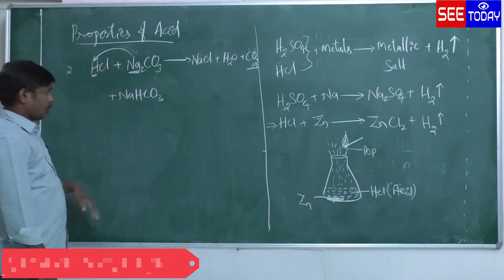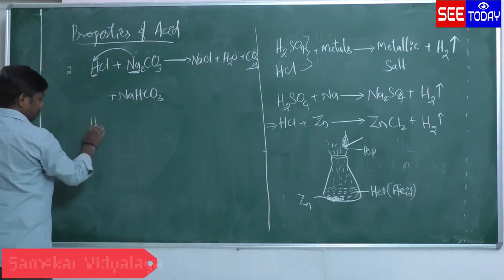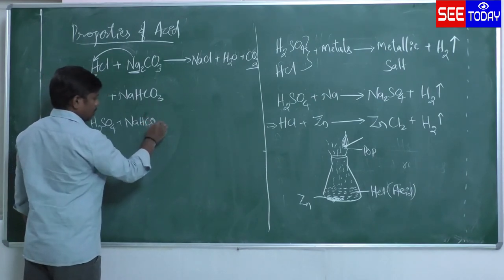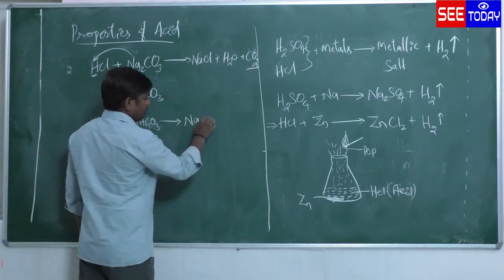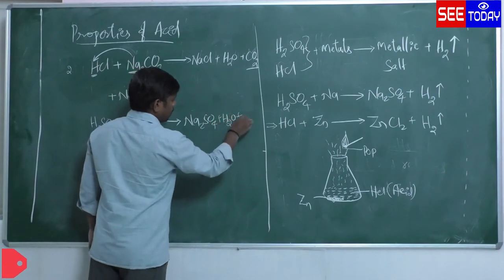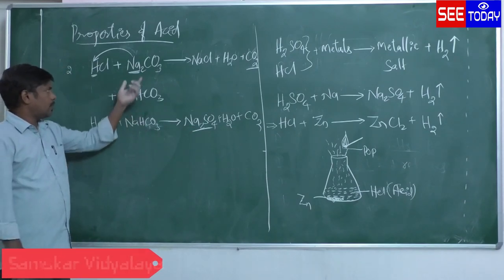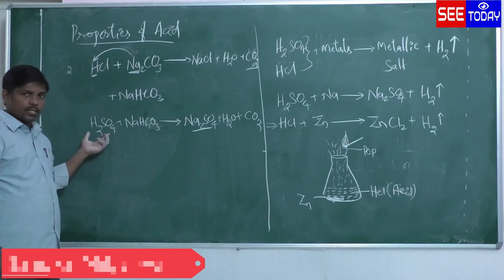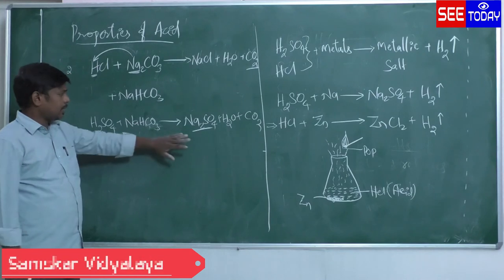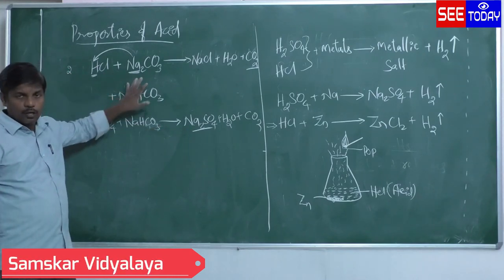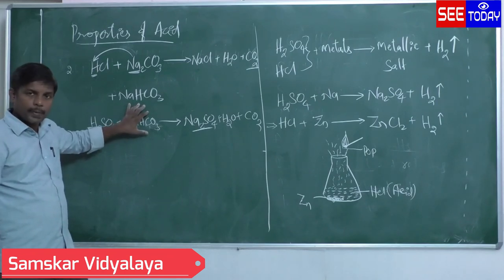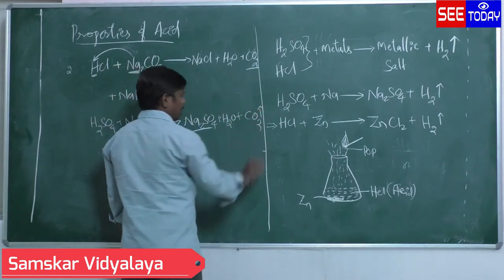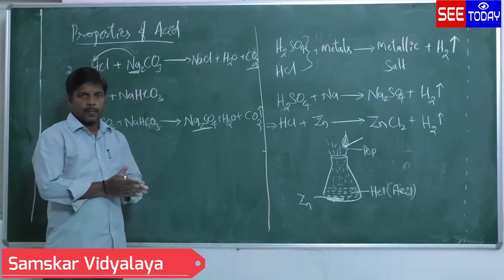For example, if Na₂CO₃ reacts with sulfuric acid, it forms sodium sulfate, water, and carbon dioxide. If it reacts with hydrochloric acid, it forms sodium chloride. So acids on reaction with metallic carbonates or metallic bicarbonates form their respective salts, water, and release carbon dioxide — indicated by an upward arrow since it is a gas.